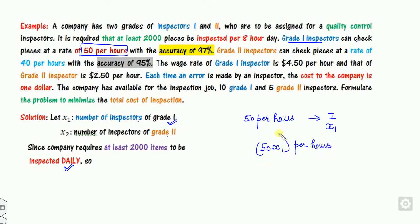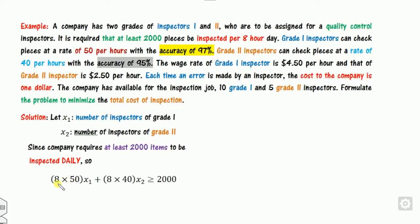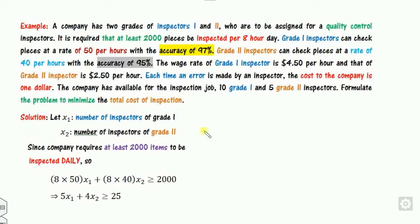Since accuracy is not directly related to the 2000-item constraint, we can skip that for now. Similarly, grade 2 inspectors check pieces at the rate of 40 per hour. So the grade 2 contribution is 8 × 40 × X2. The total inspected items give us our first constraint: 8×50×X1 + 8×40×X2 ≥ 2000.